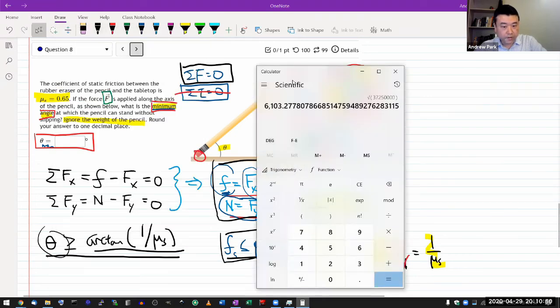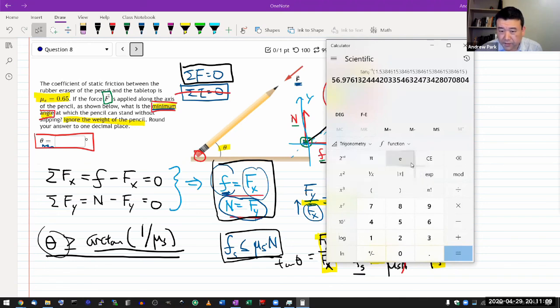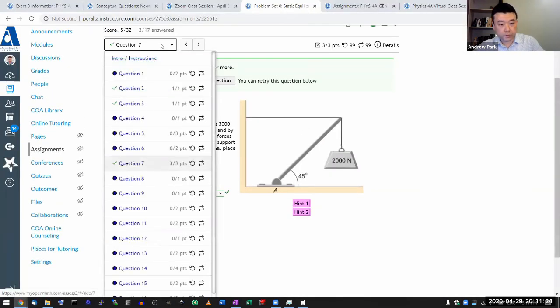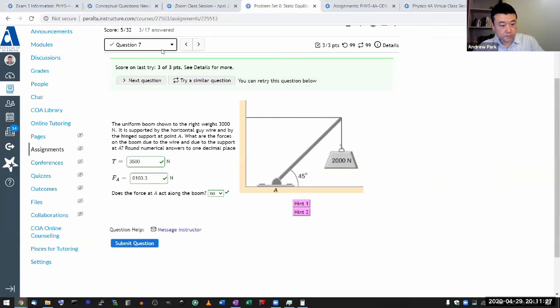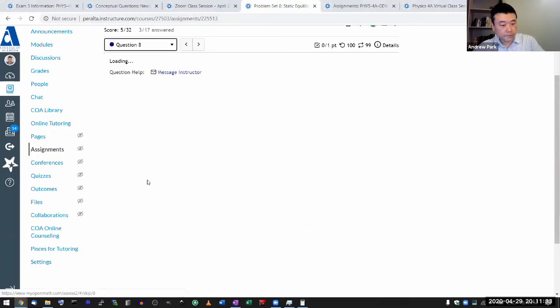So 1 over mu S, make sure I'm in degree mode so that I get the answer in degree. 1 divided by 0.65. That, it's going to be angle bigger than 45 degrees, I think. Trigonometry, 2nd, arc tangent, 56.1 decimal place, I guess it's 57.0. So 57.0 degrees. What question number was this? Question A. 57 degrees.